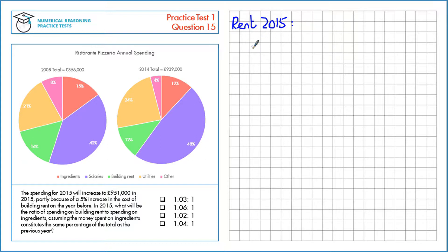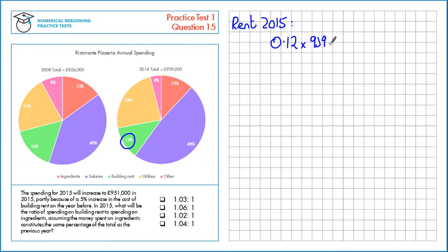We're told that the value increases on 2014 by 5%, so let's find the 2014 value first. Building rent is 12%, which is 0.12, multiplied by the total, £939,000, which gives us £112,680.